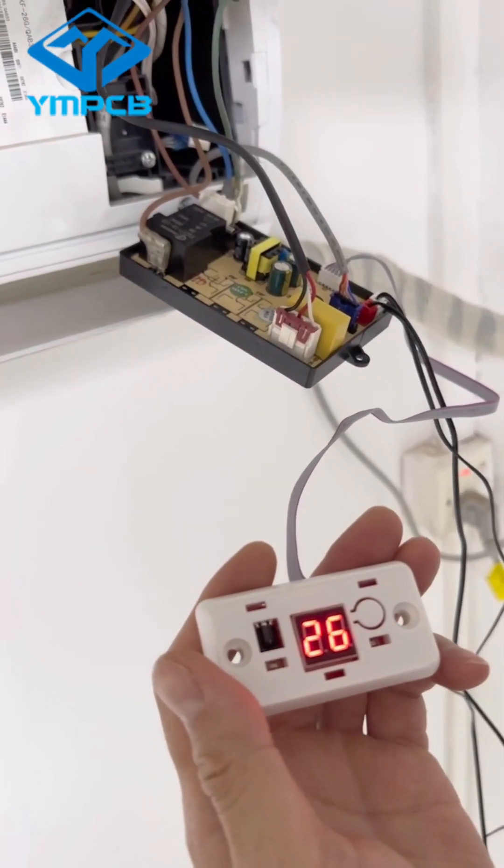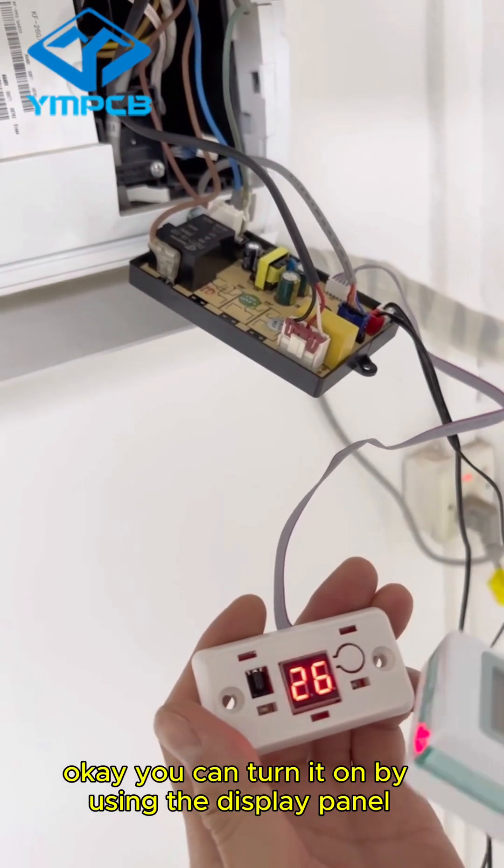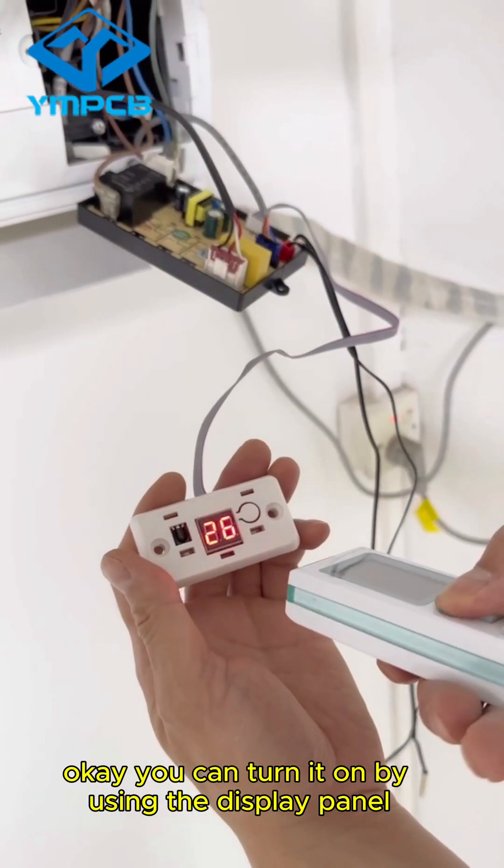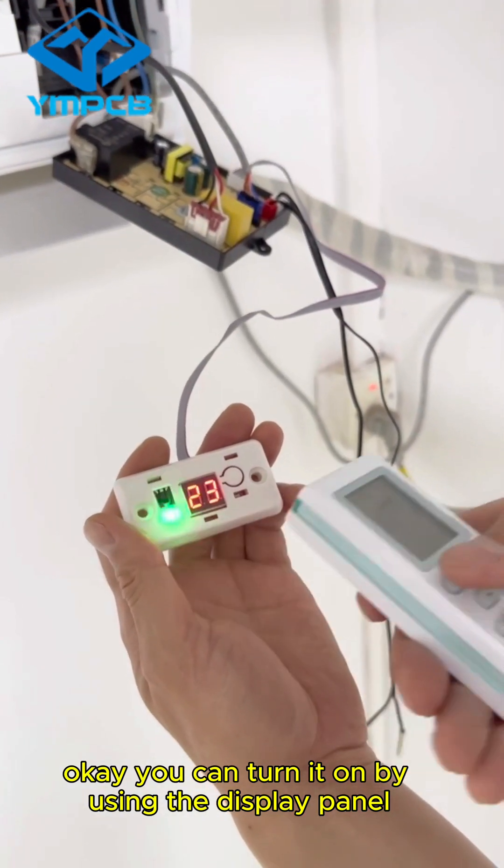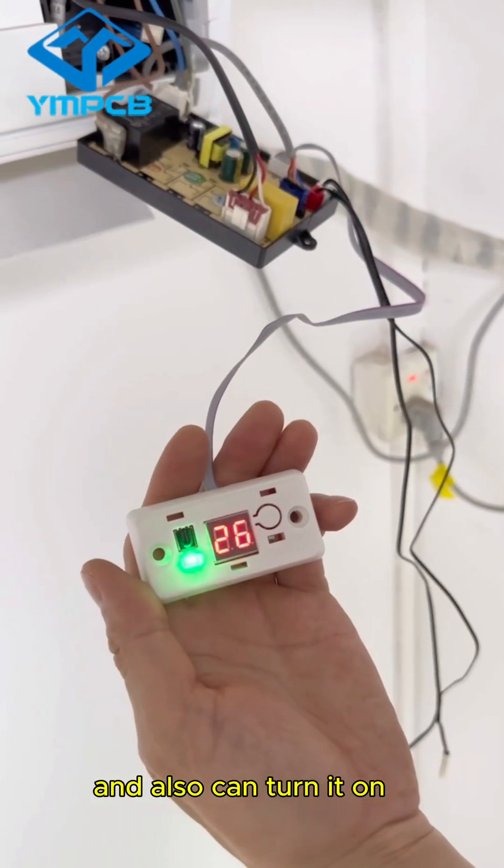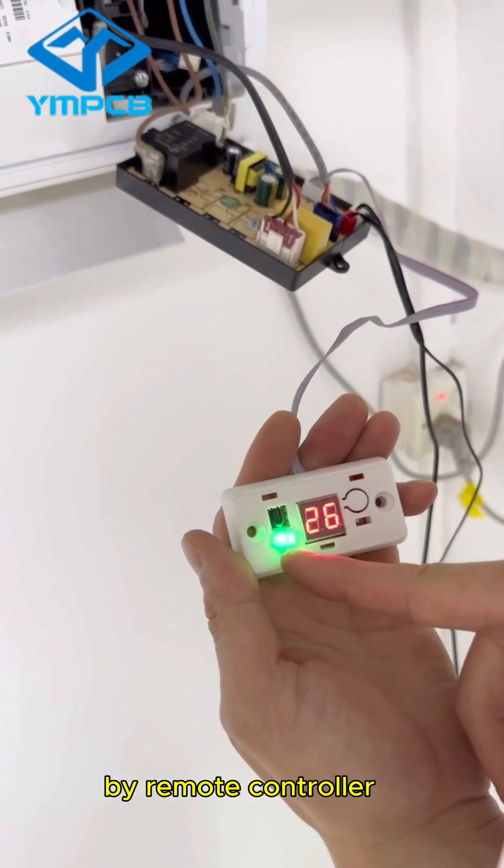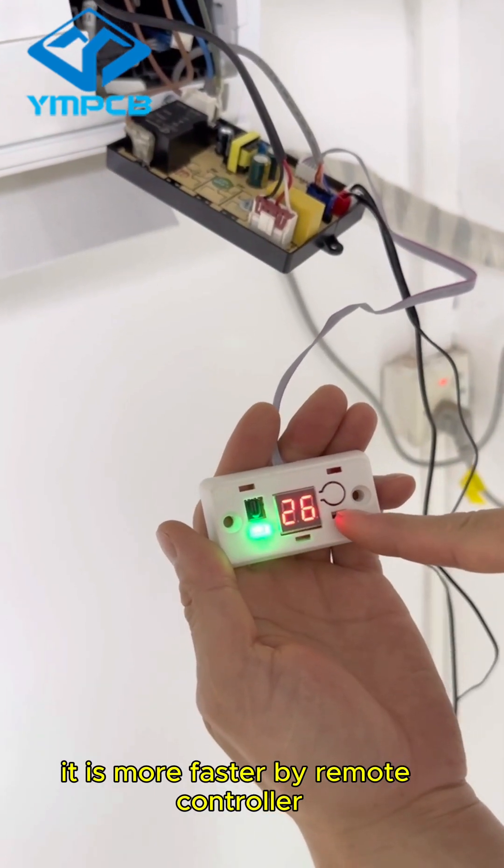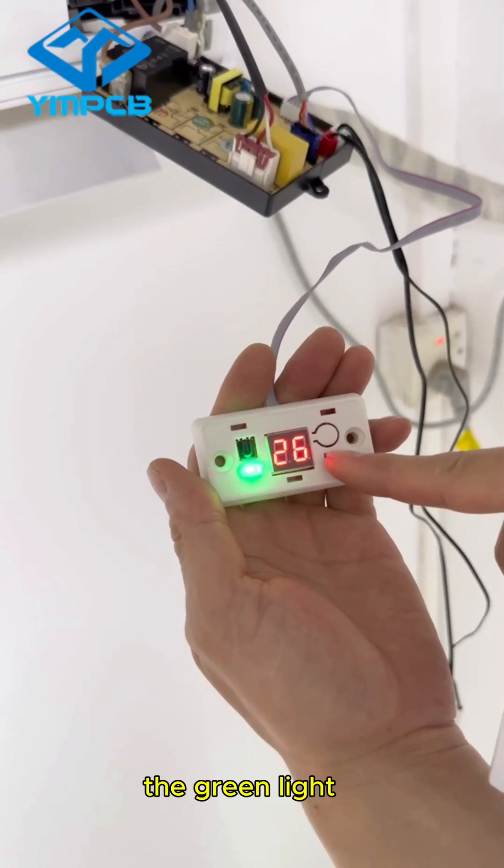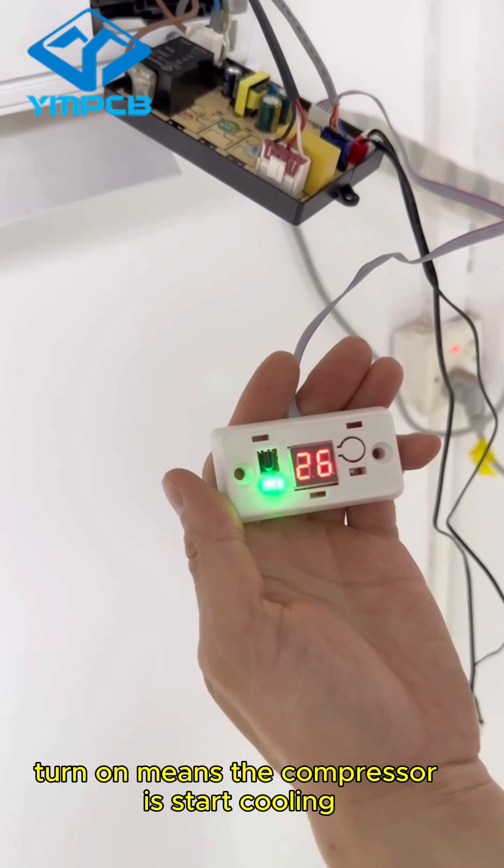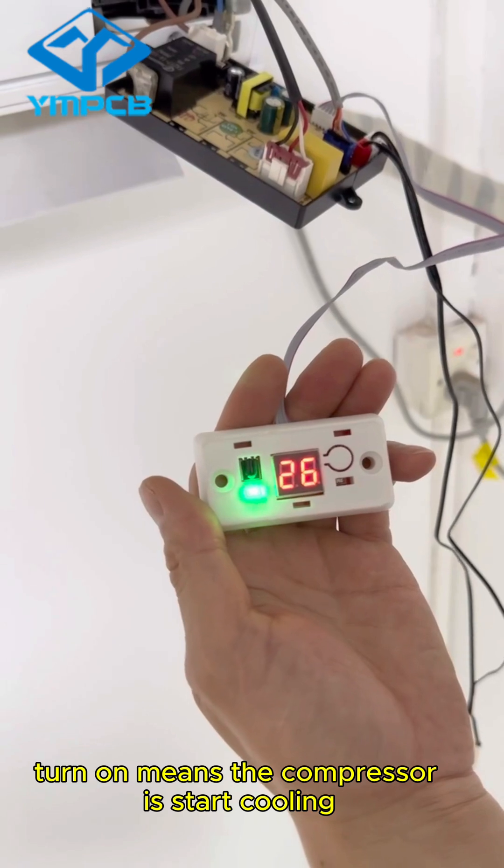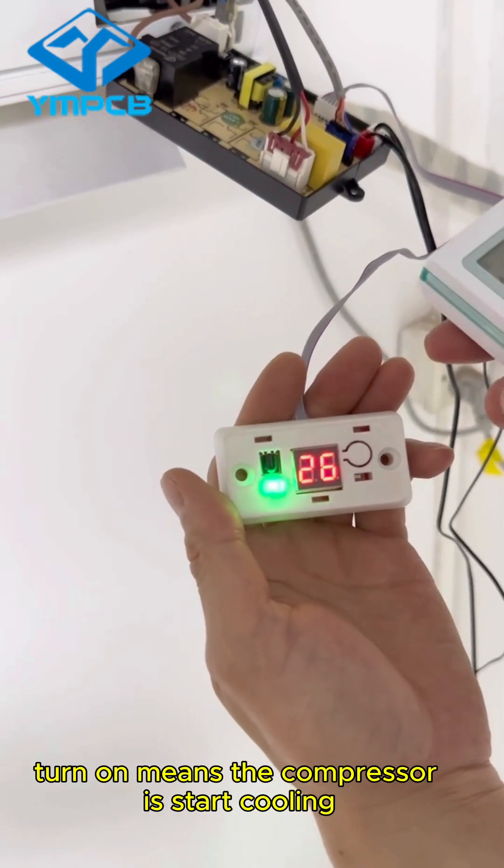You can turn it on by pressing the display panel. And also, you can turn it on by remote controller. It is more faster by remote controller. The green lights turn on means the compressor is started cooling.